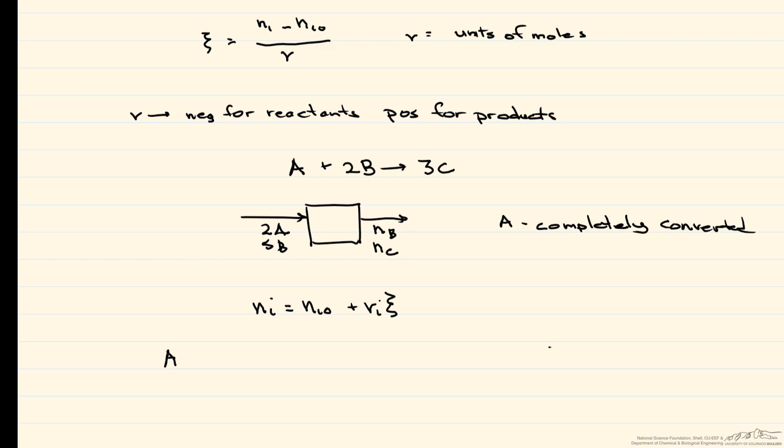Let's write out our equations. For species A, coming out, we have 0 moles, and that's going to equal the 2 moles that came in minus, because this is a reactant, 1, which is the stoichiometric coefficient, in units of moles times our extent of reaction.